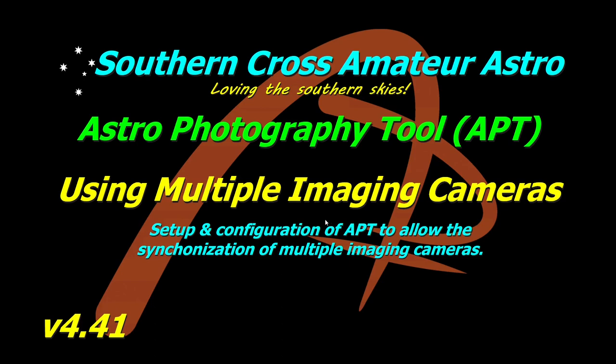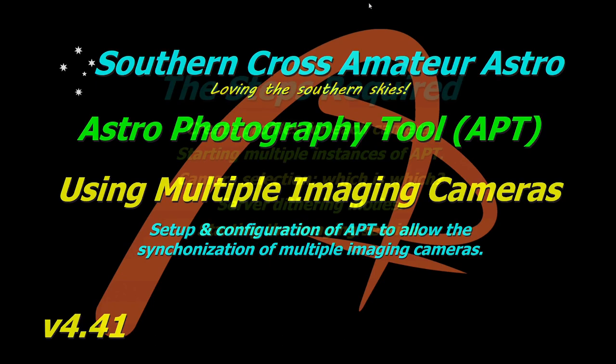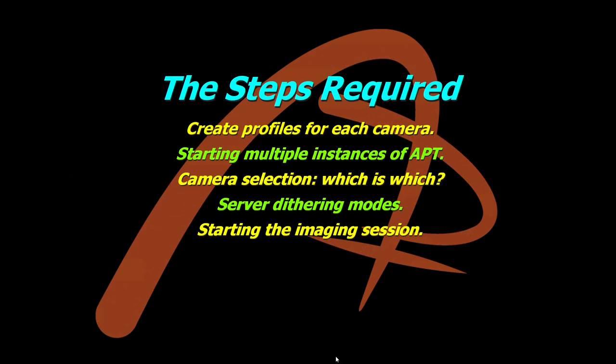It might be a fairly long video, so I apologize for that, but there is a bit involved. Here's what we're going to go through today: first, each camera needs its own profile created — I've covered that in another deep dive video linked in the description. Then we'll go through starting multiple instances of APT, creating extra shortcuts if you need more than two cameras, and what you need to do to start APT in multiple instances.